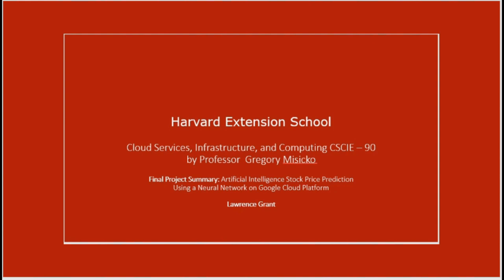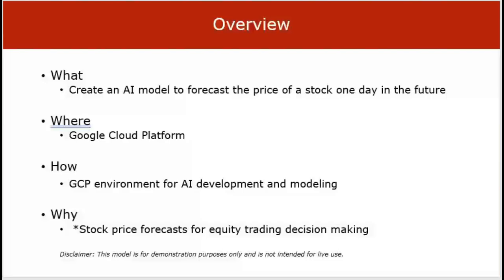This is Lawrence Grant presenting the final project for Class CSCIE 90 by Professor Gregory Messico. The project is an artificial intelligence stock price prediction model using a neural network on the Google Cloud Platform. The object of the model is to forecast the price of a stock one day in the future, using the GCP environment for AI development and modeling to support equity trading decision making.